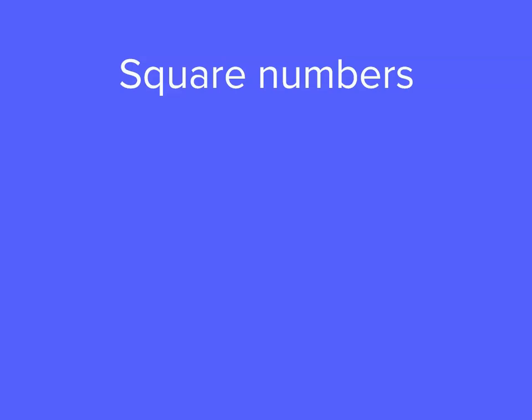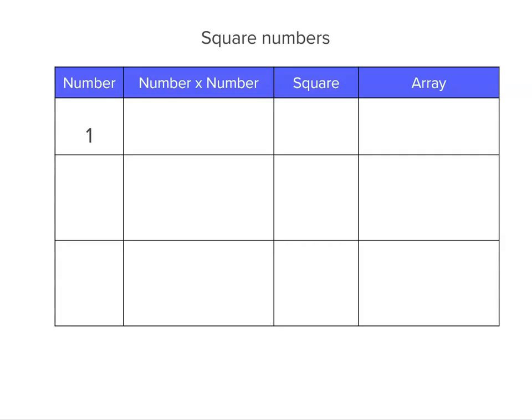Square numbers are special numbers that we use quite a lot. A square number is a whole number that you multiply by itself.